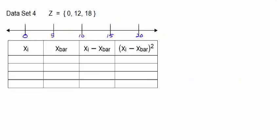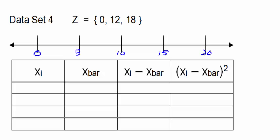This is our last data set. We have the values 0, 12, and 18. So data set 4 has more spread than data set 3, so we expect standard deviation to be larger. So our X's are 0, 12, and 18. X bar would be the sum of these three: 0 plus 12 is 12 plus 18 is 30. 30 divided by 3 is 10.